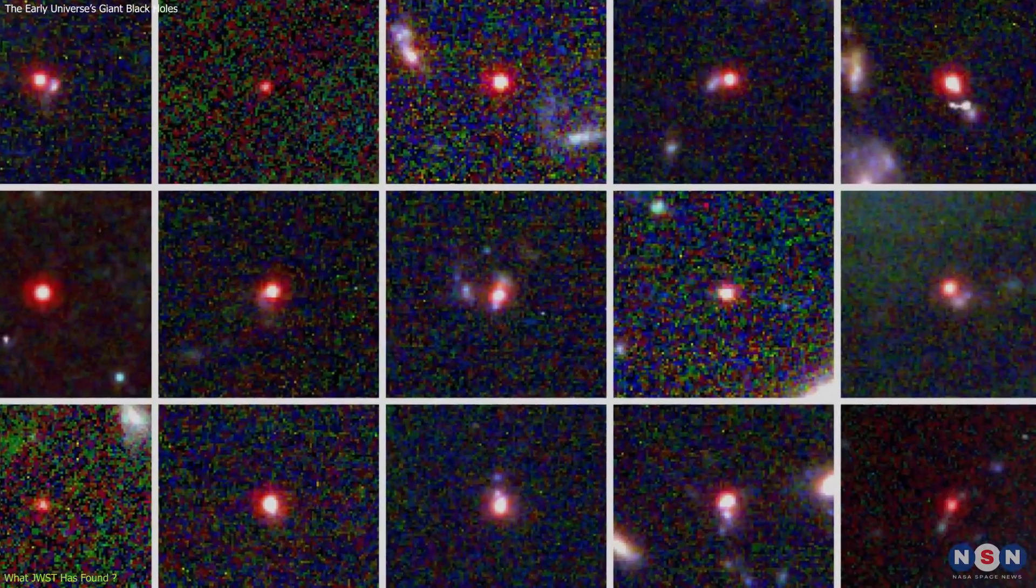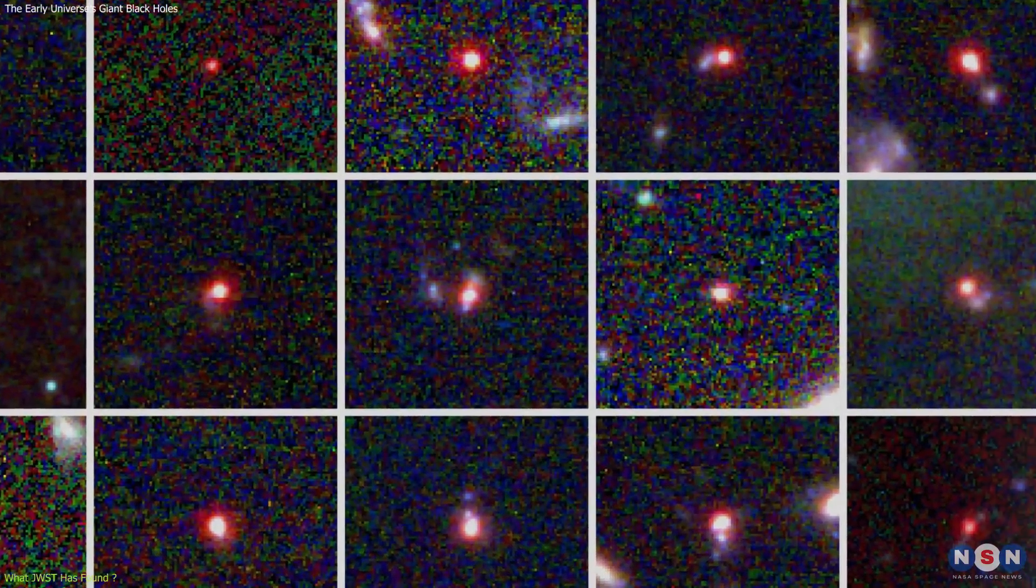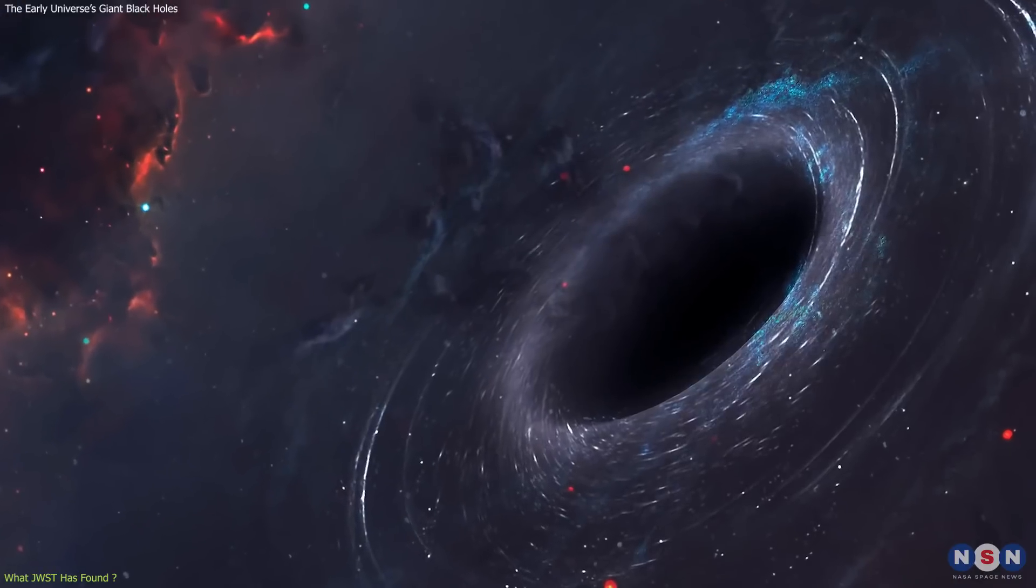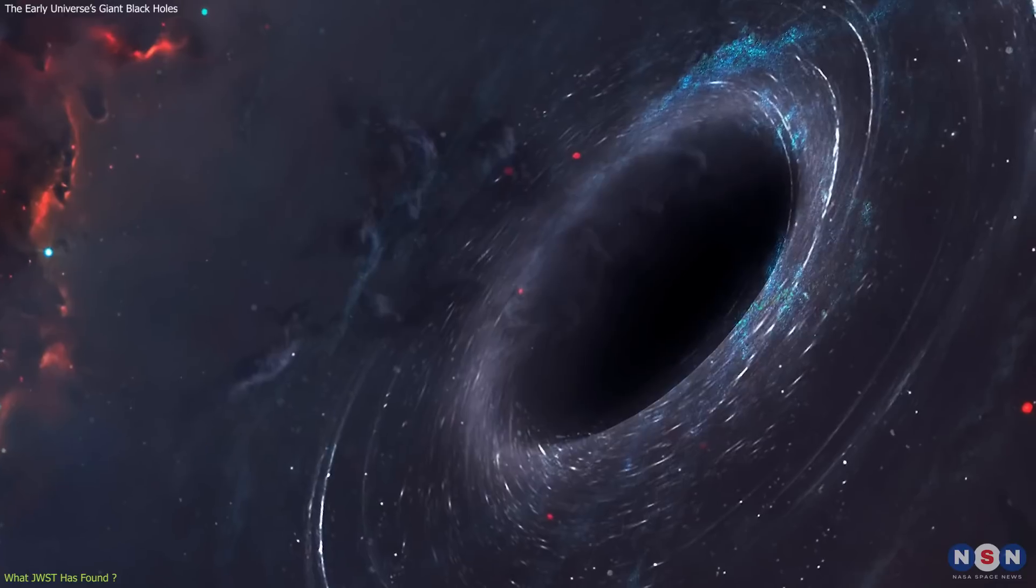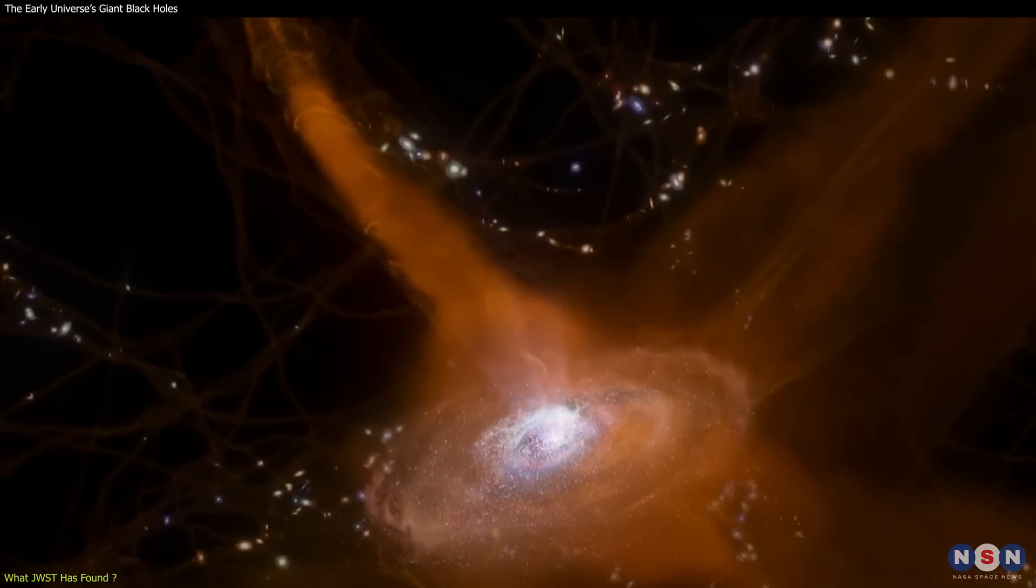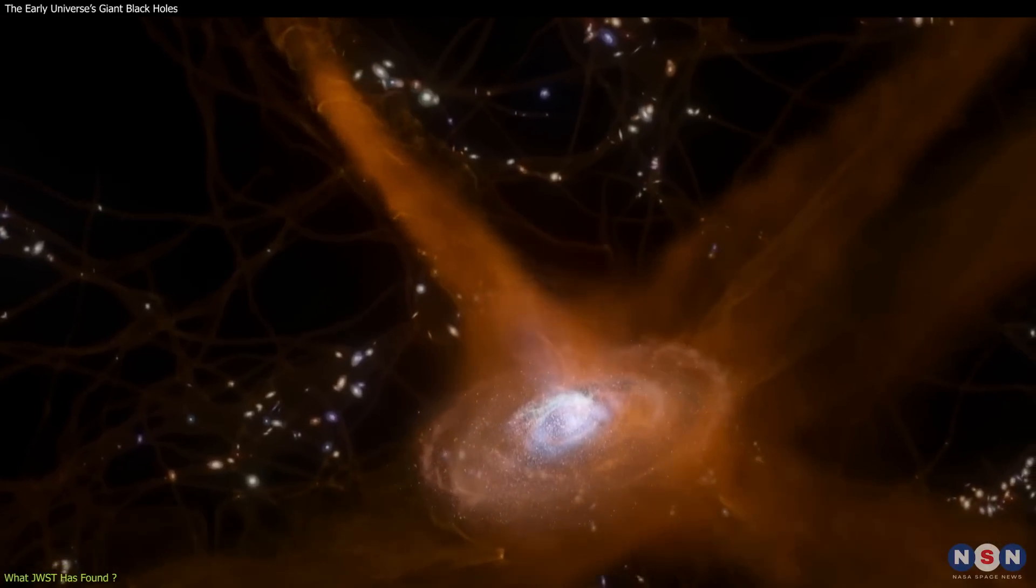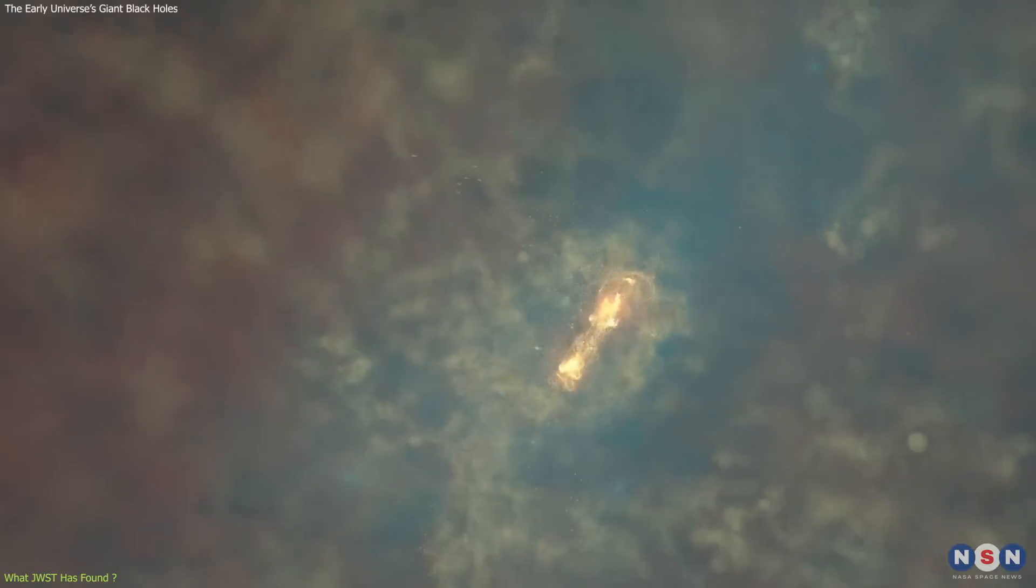These black holes are not what astronomers expected to find in the early universe. They are too big and too numerous for the current models and theories of how galaxies and black holes co-evolve. How did they form so early? How did they grow so fast? And what does this mean for our understanding of galaxy formation and evolution?